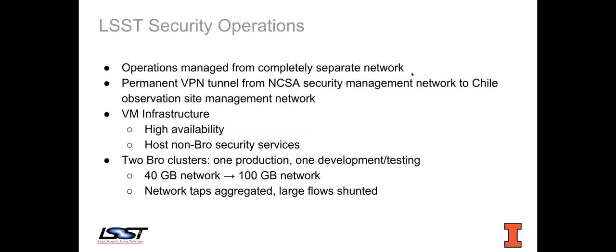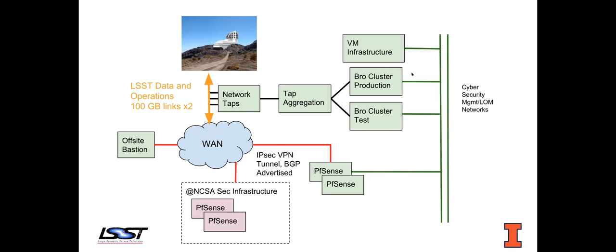Those networks are tapped and aggregated with an Arista tap aggregation system. Large data flows are shunted so that Bro doesn't have to eat them. Otherwise it monitors all traffic in and out of the perimeter. This diagram shows how this is set up, and the idea is that anything security operational is totally separate and walled off from the rest of the site.